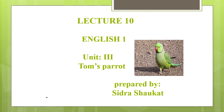Today we are going to do Unit 3 of your English book. What is the name of your English book? Yes, very good — Oxford Reading Circle. We are going to do Unit 3 of Oxford Reading Circle. What is the title of Unit 3? Open your books and look into it. Tom's Parrot. Very good. We are going to do Tom's Parrot from Oxford Reading Circle. Let's start.